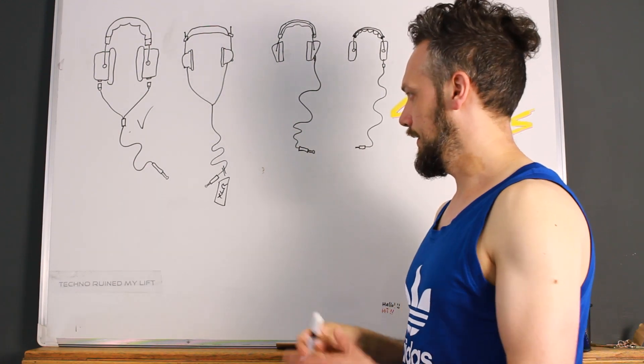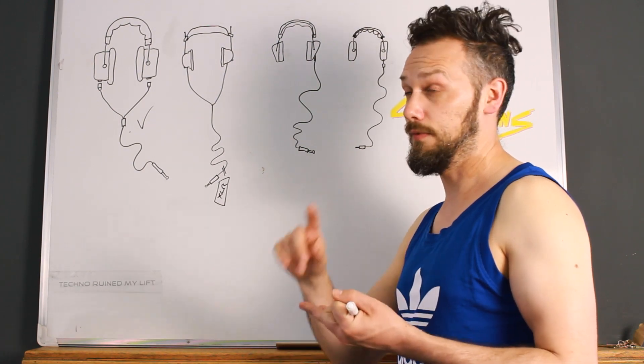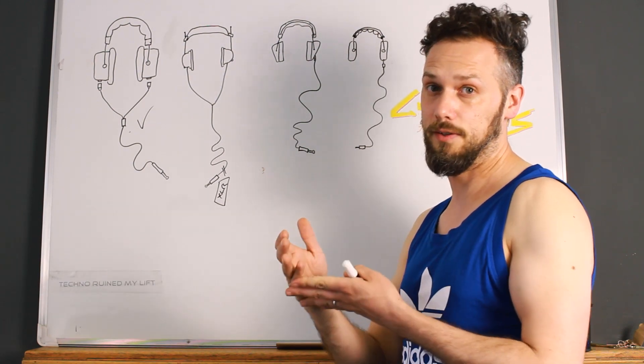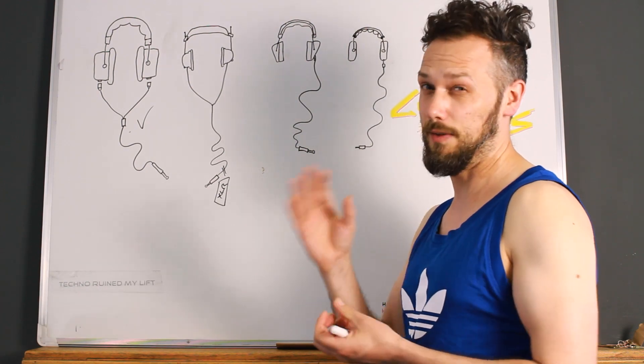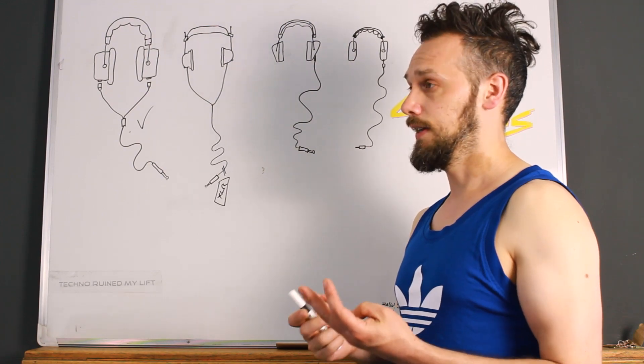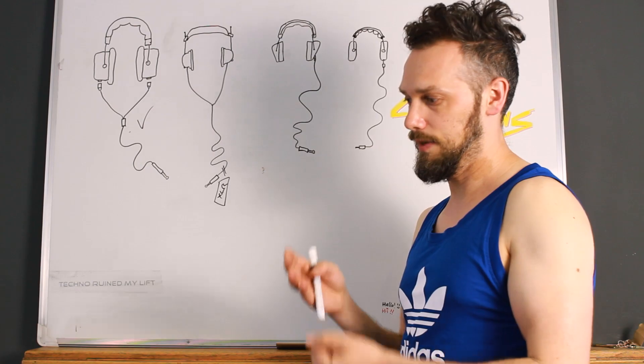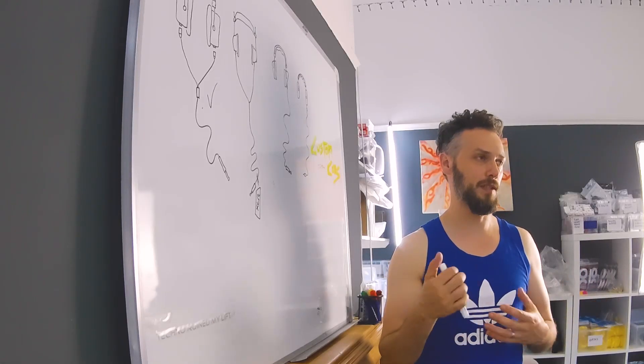While I'm at it, there's lots of different balanced connections. There's 2.5mm, 4.4mm, 4 pin XLR, two 3 pin XLRs and lots of other little obscure ones. They all basically do the same thing. They've got four wires inside and two for left, two for the right. So a lot of people ask which is best.